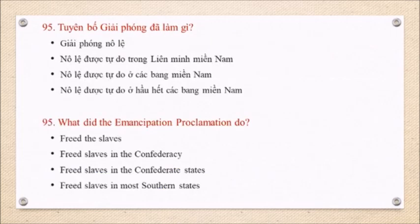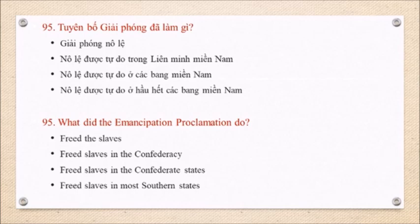Question 95: What did the Emancipation Proclamation do? Freed slaves in the Confederacy. Freed slaves in the Confederate States — most Southern states.